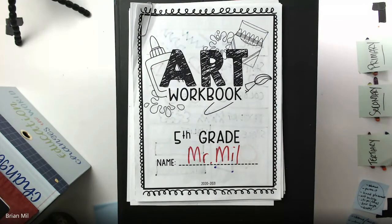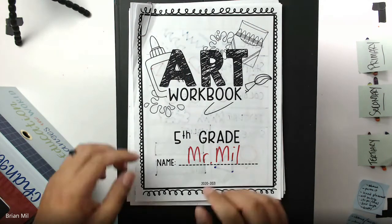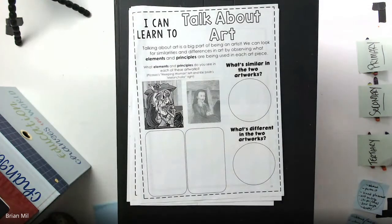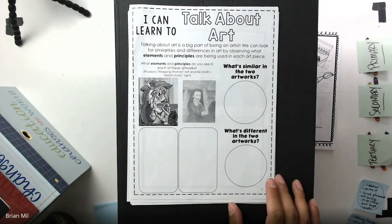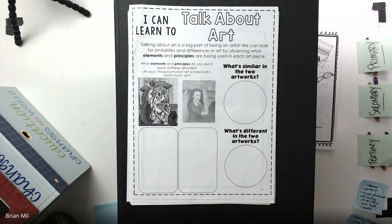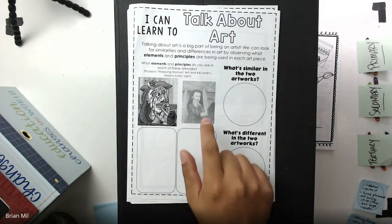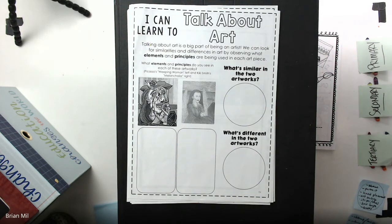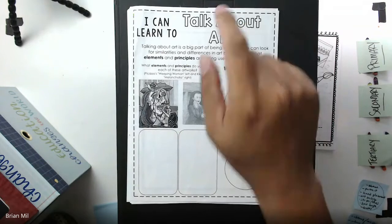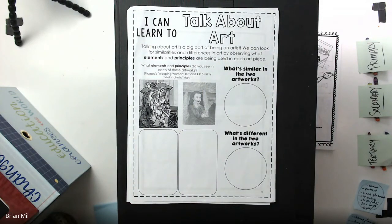Here's the artwork book. The last page that we did was the two-point perspective. The next page after that is called Talking About Art. It looks something like this. I'll wait a little bit so you guys can get to this page. It has two circles on the right-hand side, and it has a picture of Picasso's artwork and Kiki Smith's artwork. It's towards the back — the page right after the two-point perspective. Again, if you don't have the workbook, a blank sheet of notebook paper will work just as fine.